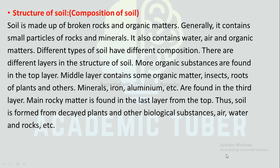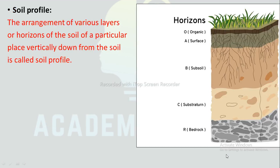Structure of soil: There are different layers. More organic substances are found in the top layer. The middle layer contains some organic matter, insects, and roots of plants. Minerals like iron and aluminium are found in the third layer. The main rocky matter is found in the bottom layer. Thus, soil is formed from decayed plants and other biological substances, air, water, and rocks.